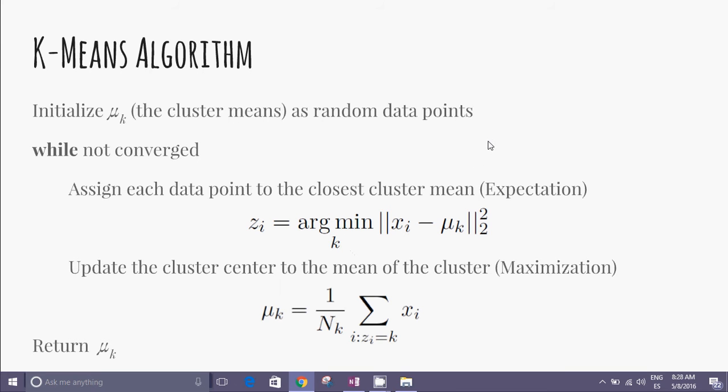The K-means algorithm has the following pseudo-code: Initialize the cluster means as random data points. Then two phases: the expectation stage assigns each data point to the closest cluster mean, and the maximization phase updates the cluster center to the mean of the cluster.